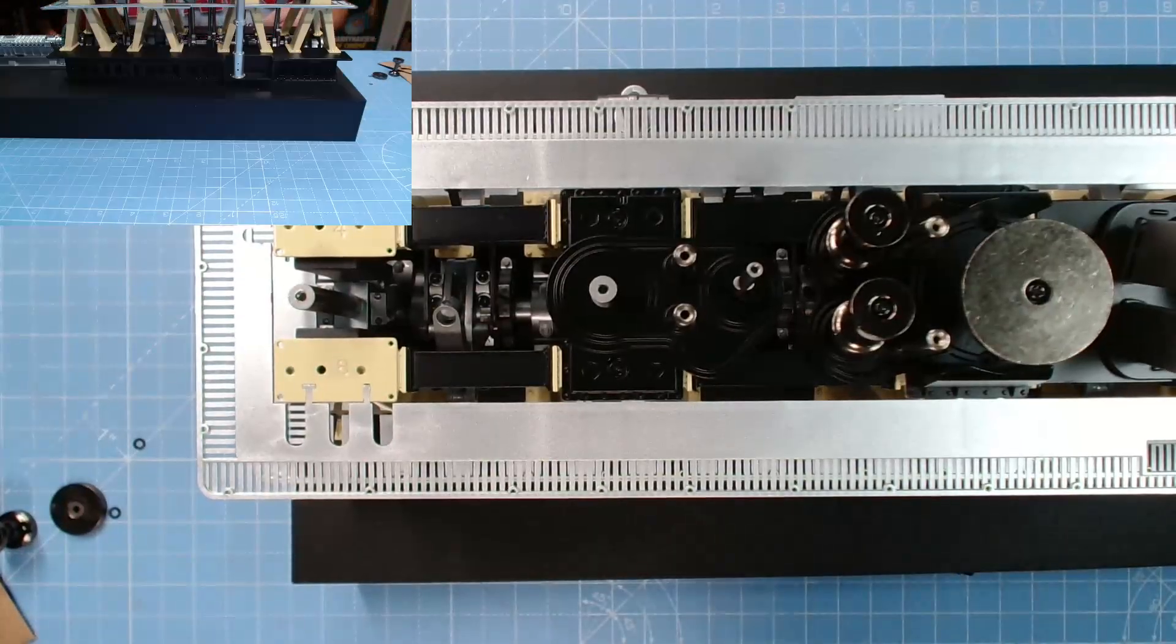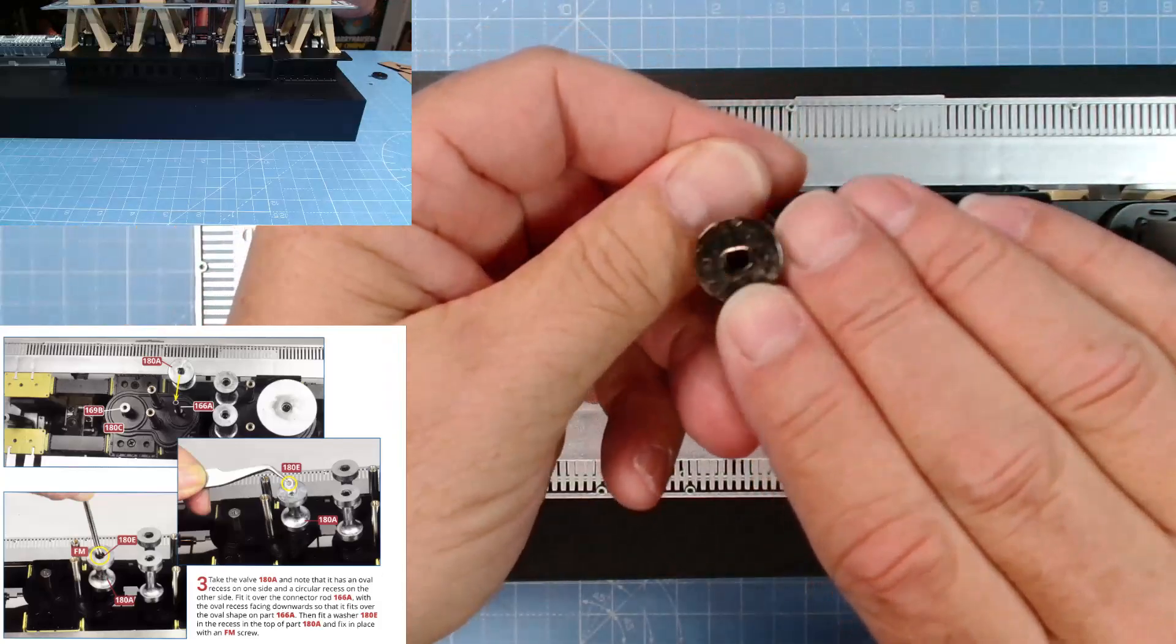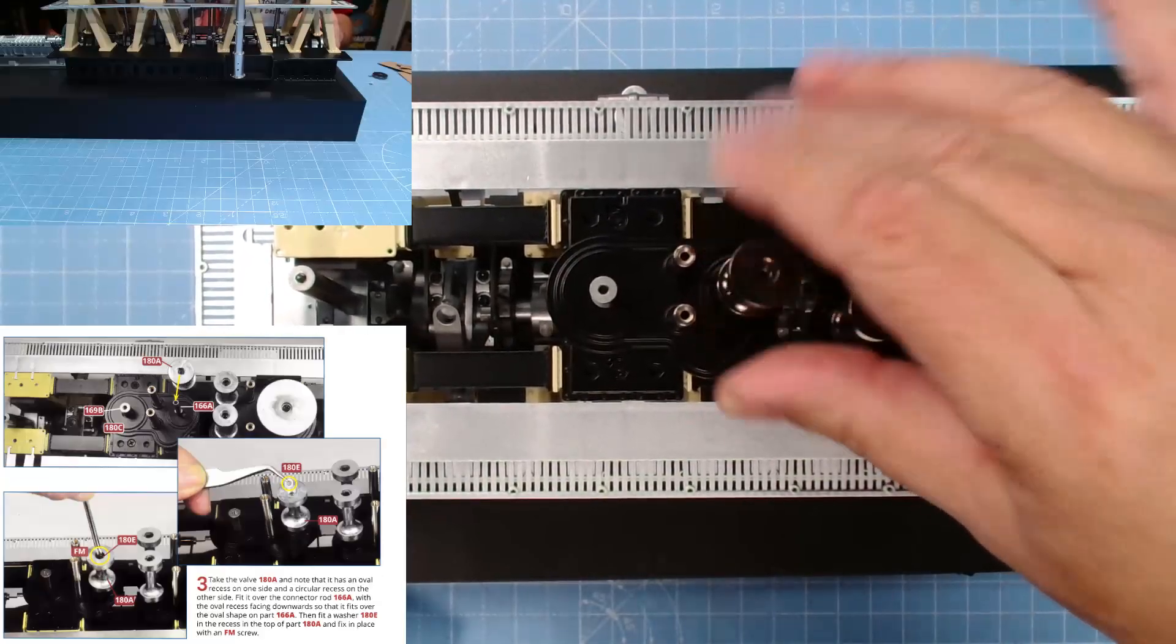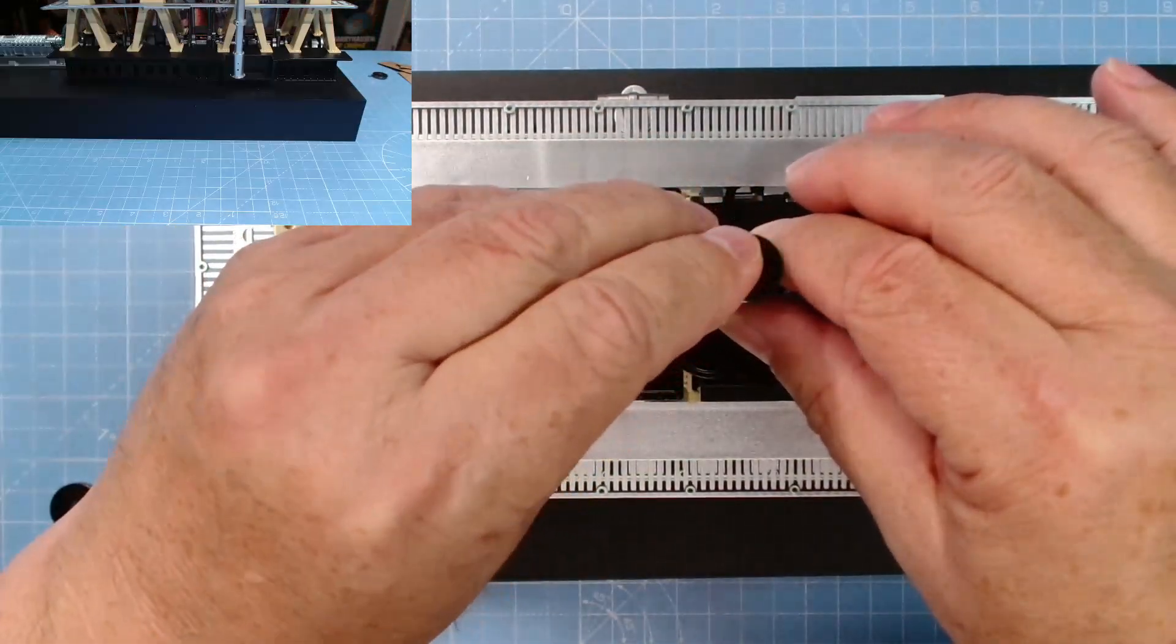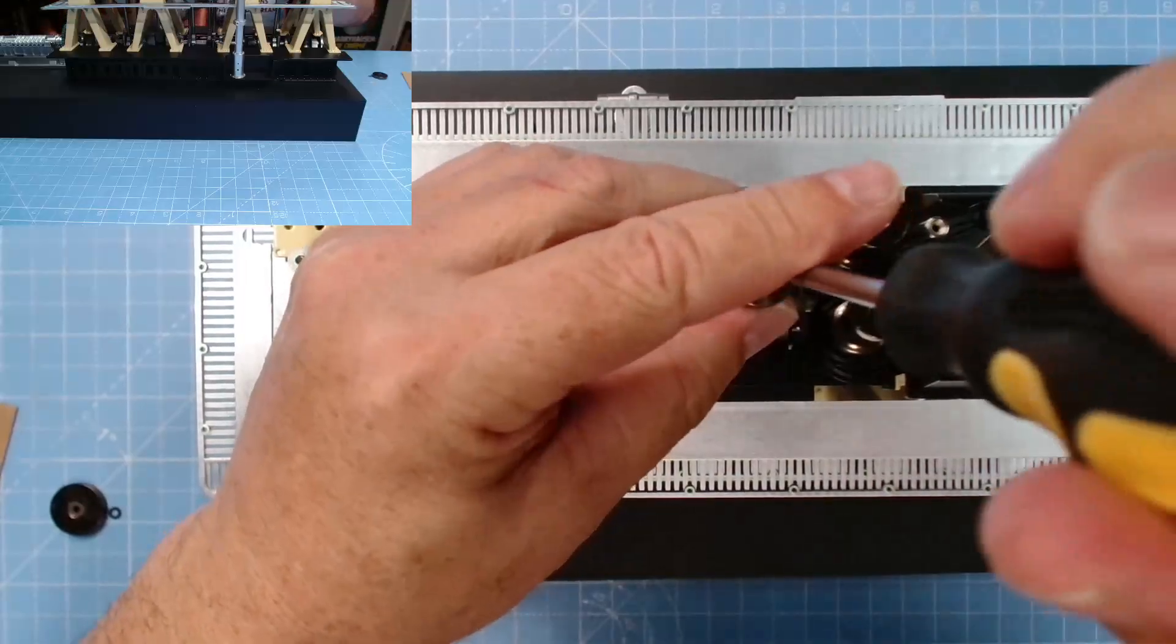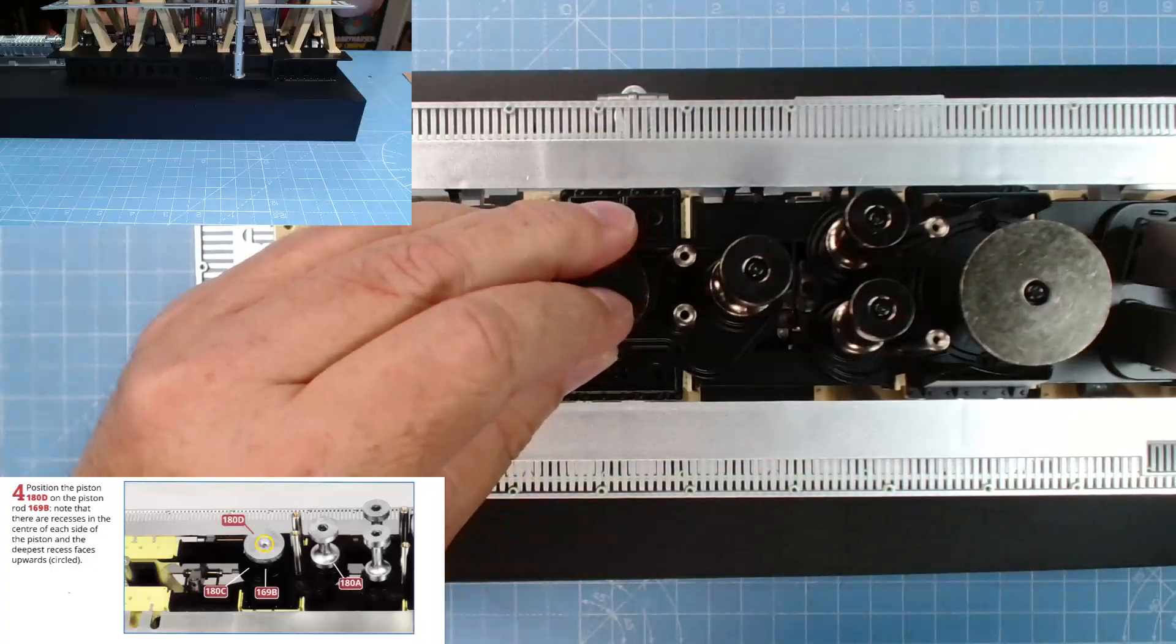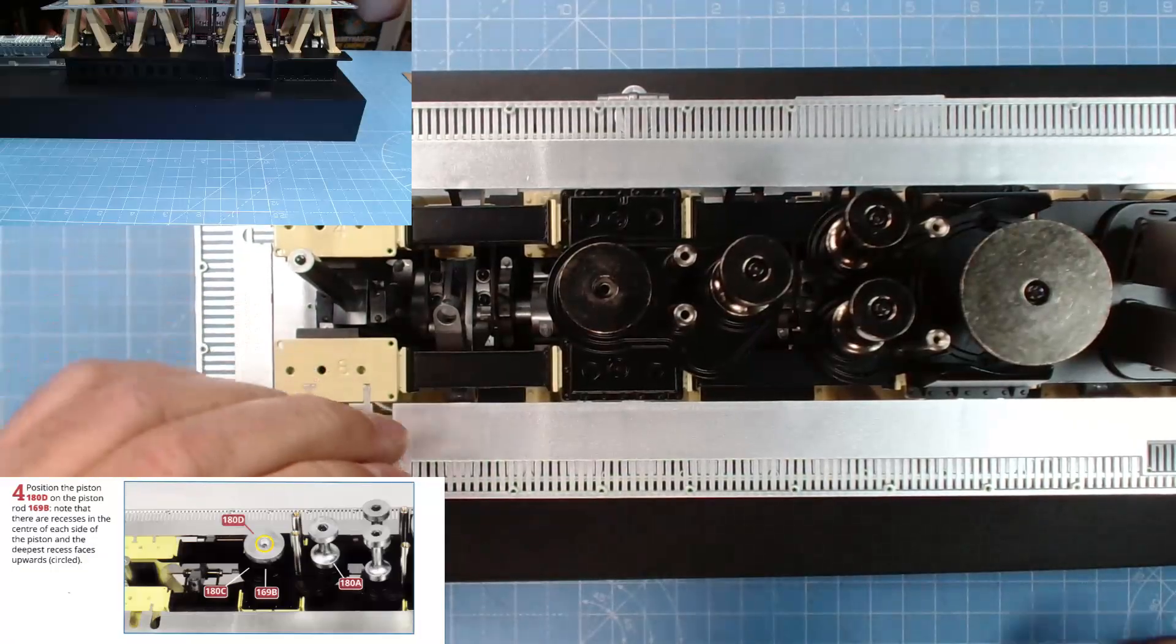Next, take the valve 180A. It has an oval recess on one side and a circular recess on the other. Fit it over the connector rod 166A with the oval recess facing downwards, so that fits over the oval shape of part 166A. Then fit a washer 180 in the recess in the top of part 180A and fix in place with the FM screw. We'll tighten that up with a larger screwdriver. Now position the piston 180D on the piston rod 169B. Note that there are recesses in the center of each side of the piston, and the deepest recess faces upwards.